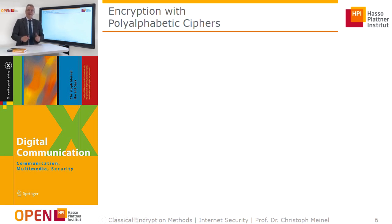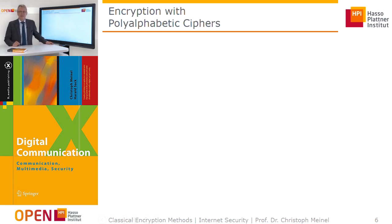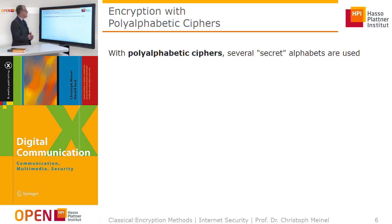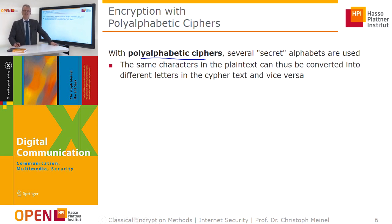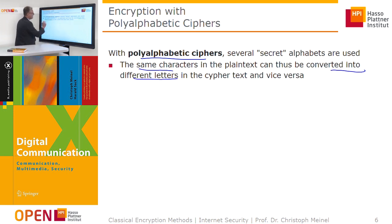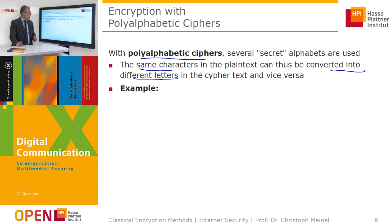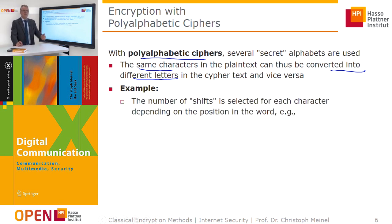Although the Caesar cipher is good for explaining encryption, it is too simple for modern applications, because in a brute force attack it is cracked after at most 26 tries. A more complicated approach is poly-alphabetic ciphers, which use several secret alphabets for encrypting the message.